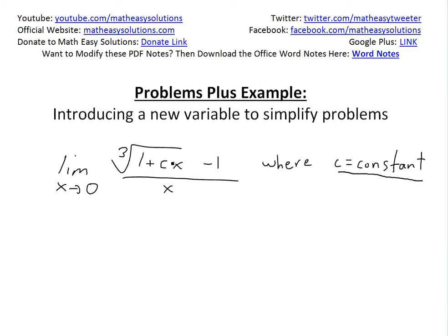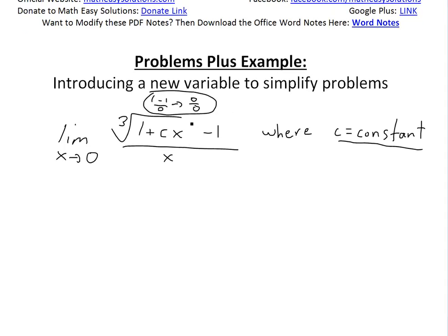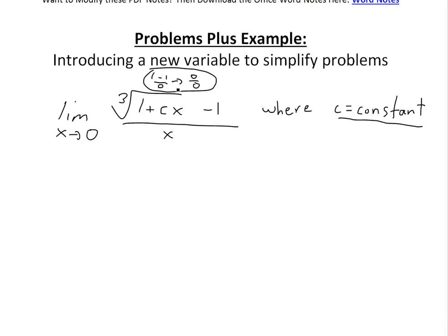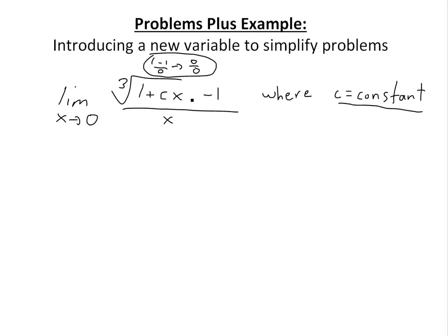In my earlier videos on limits, I would try to simplify the top and bottom to solve it, because as you plug in 0, you'll have 1 minus 1 on top, so you're going to have a 0 over 0 here. So this is undefined. You can actually solve this using L'Hôpital's rule, but I'll do that at the end. You can see it in the video link below.